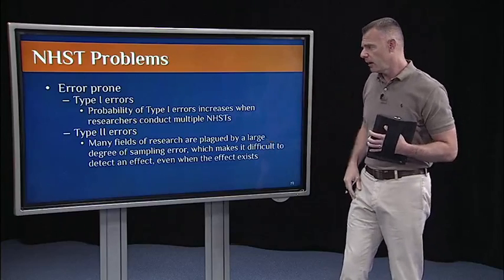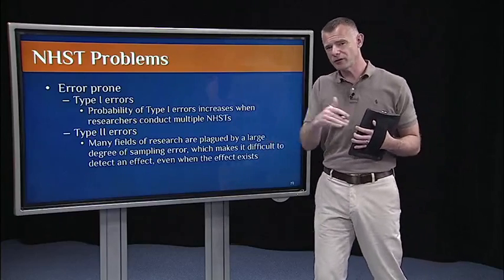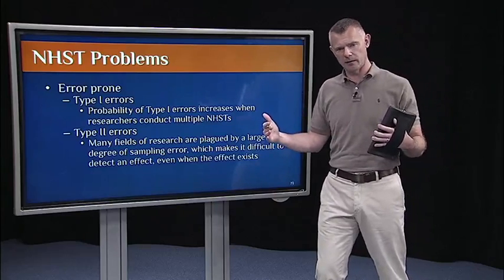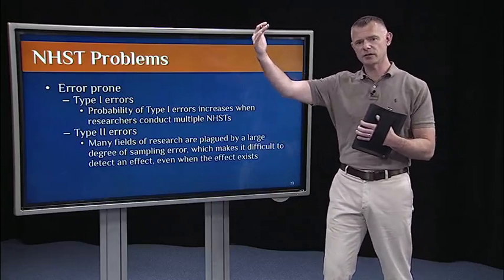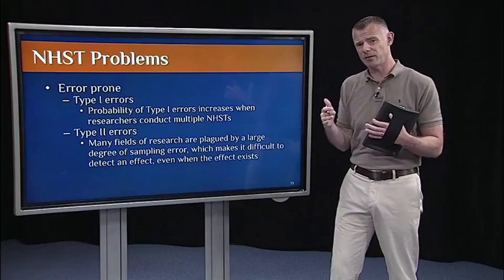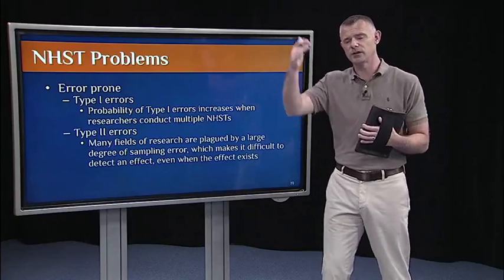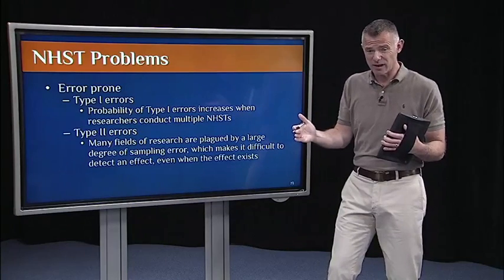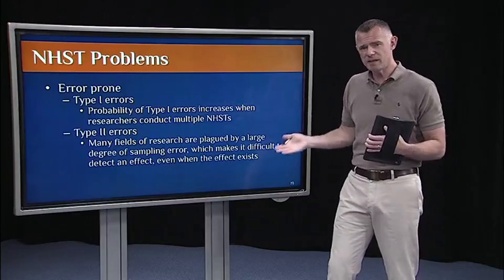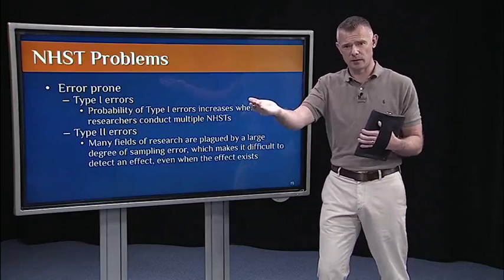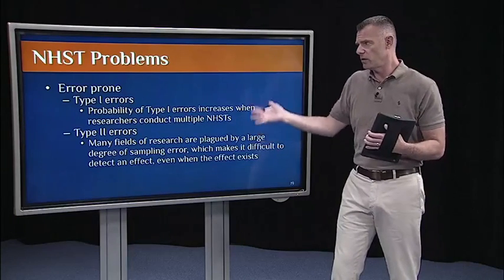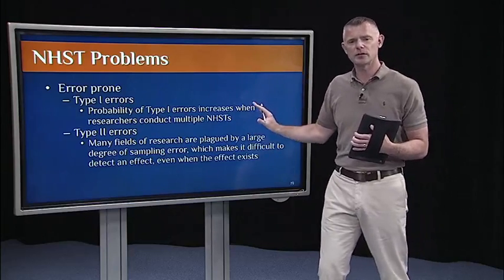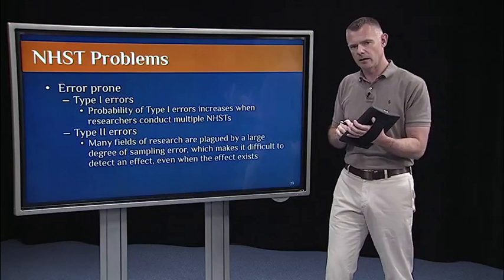On the flip side, there are a lot of fields of research, especially in the social sciences and especially psychology, that are just plagued with a large degree of sampling error. We have big populations, but don't have a lot of resources to obtain big samples. So, we get small samples relative to these big populations, which gives us a large amount of sampling error, big estimates of standard error, which means we're going to wind up missing a lot of effects, even if they really exist out there in the population. So, not only is it error prone, we know we have a certain probability of getting type one and type two errors, but in a lot of fields of research, it's actually worse than I outlined in the first segment.